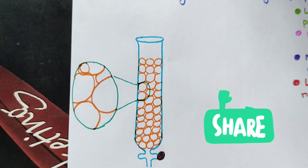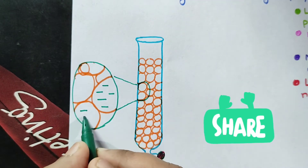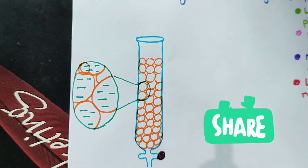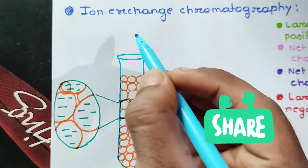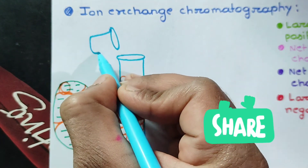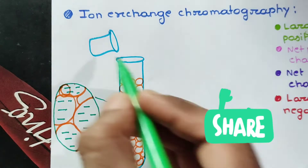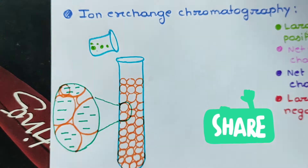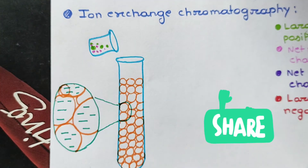This is the magnification of a particular part where you can see that the resin beads are surrounded by negative groups in the case of cation exchange chromatography. Now, this is the protein mixture.